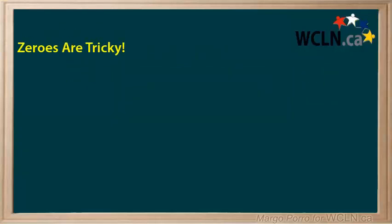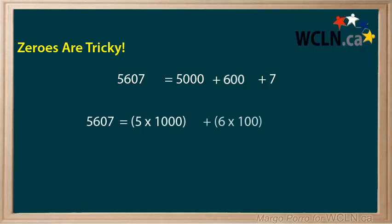Zeros are tricky. If there is a 0 in the number, it is a placeholder. In expanded form, we don't have to write the 0. But when you write the actual number, the 0 is very important. It means something. To expand 5,607, we can simply add 5000 plus 600 plus 7 or multiply 5 times 1000 plus 6 times 100 plus 7 times 1.